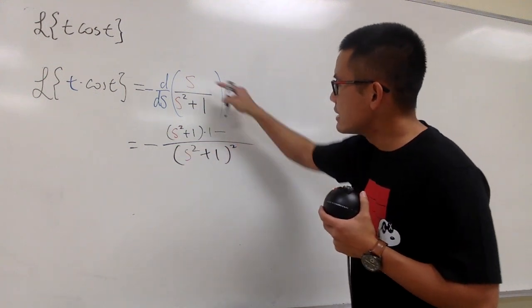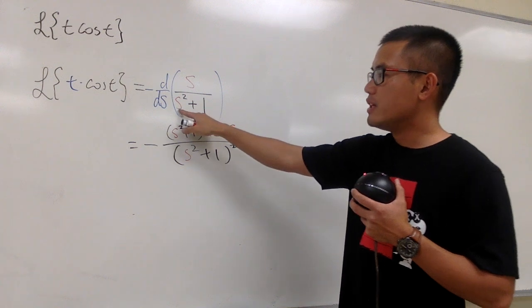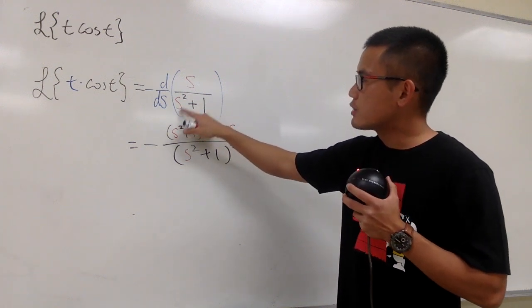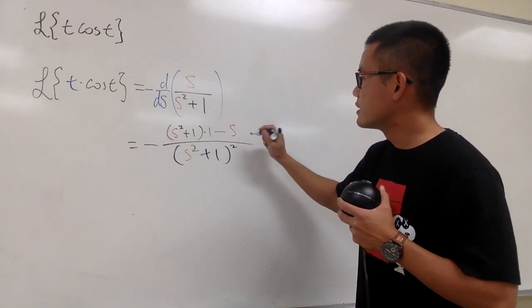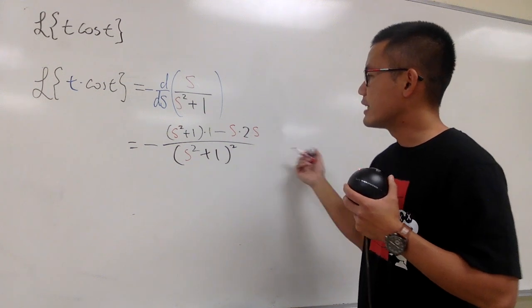And then minus the top function, which is s, times the derivative of the bottom. Derivative of s squared plus 1 is just 2s, so we multiply by 2s.